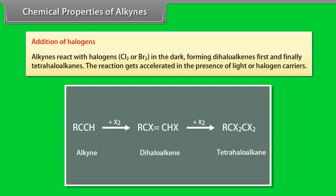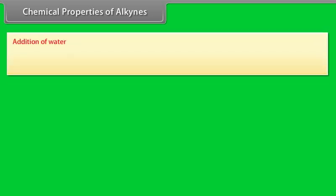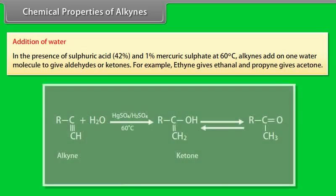The reaction gets accelerated in the presence of light or halogen carriers. Addition of water: in the presence of sulfuric acid (42%) and 1% mercuric sulfate at 60 degrees centigrade, alkynes add one water molecule to give aldehydes or ketones. For example, ethyne gives ethanal and propyne gives acetone.